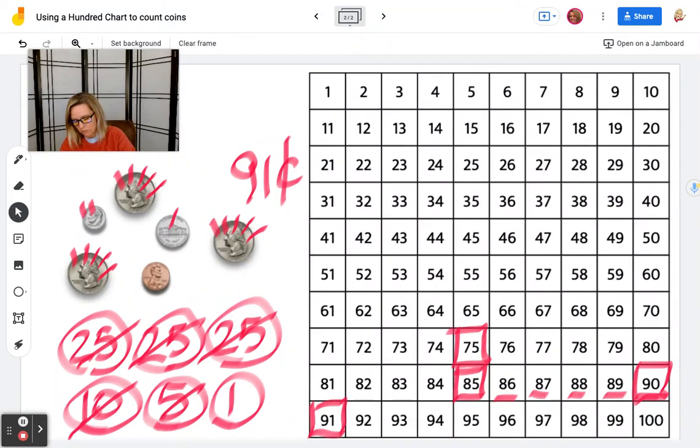Then we come back through and we count by fives for all of our hairy money. 5, 10, 15, 20, 25, 30, 35, 40, 45, 50, 55, 60, 65, 70, 75, 80, 85, 90. And that is just one, 91 cents.